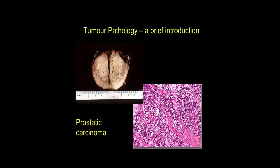Even though this is a prostatic adenocarcinoma, it's not very easy to see glands in this tumour. It's actually forming rather irregular sheets. There is a particular grading system — the Gleason system — which is used to try and grade tumours in this context.